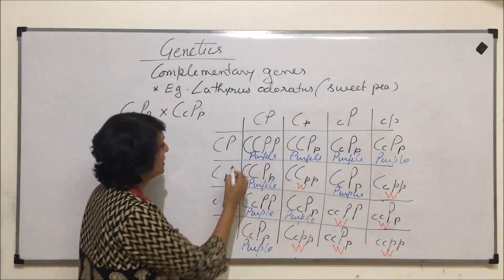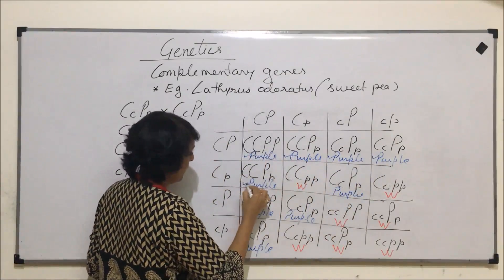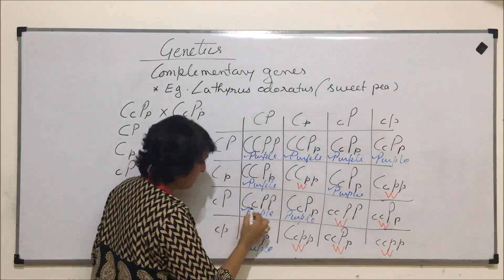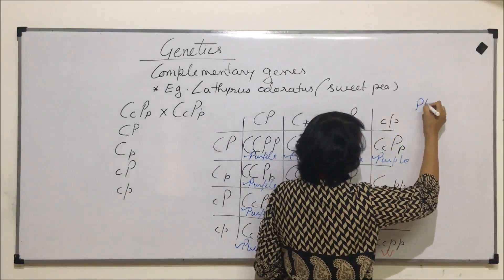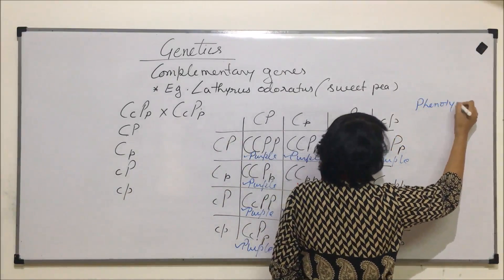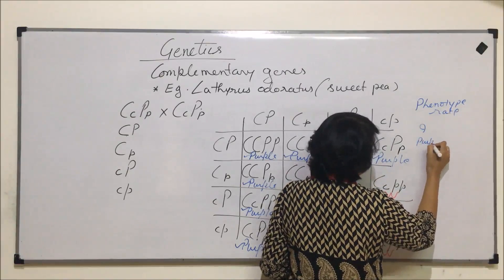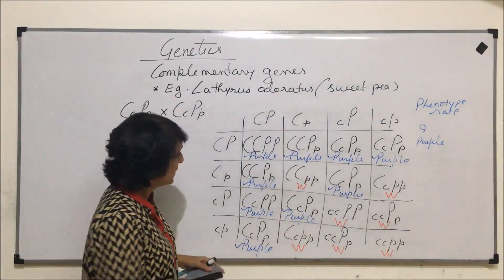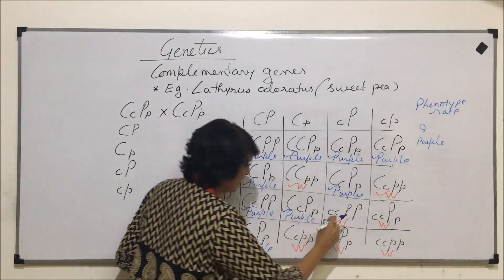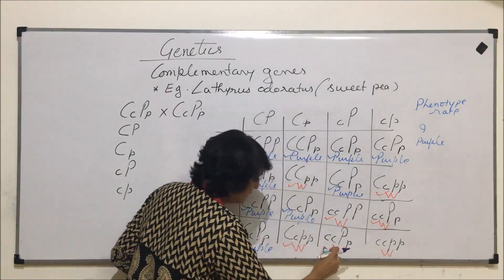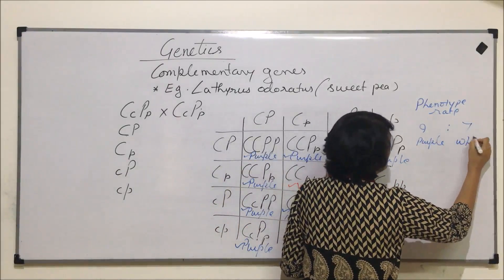Counting the results from the Punnett square: we have nine purple-flowered offspring and seven white-flowered offspring, giving a phenotypic ratio of 9:7.